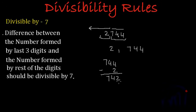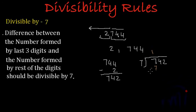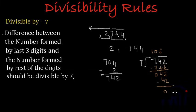The next step is to divide 742 by 7 and we should get 0 as our remainder. Dividing 742 by 7: 7 goes into 7 once — subtract to get 0. Bring down 4; since 4 is smaller than 7, put a 0 and bring down 2, making it 42. 7 times 6 is 42, and 42 minus 42 gives remainder 0. So 742 is divisible by 7.